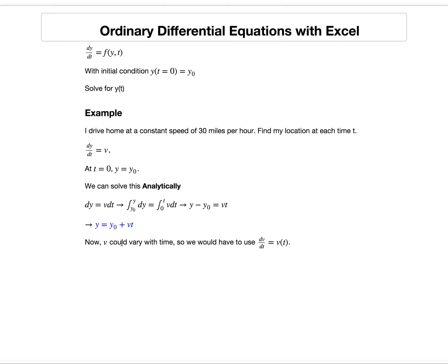My position increases linearly with time when I have a constant velocity. Now, v could vary with time and be some nonlinear function, in which case we would write dv dt equals v as a function of time, and when we perform the integration, we need to take into account the functional dependence of v on time. We can't always integrate analytically. We might not be able to if it's nonlinear, or we might have multiple variables, or it might be easier to use a numerical method.